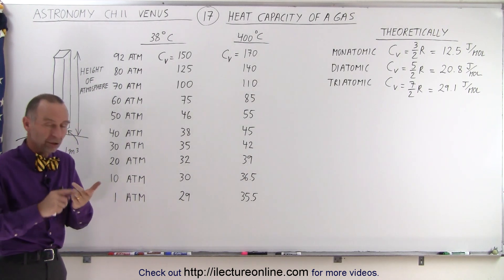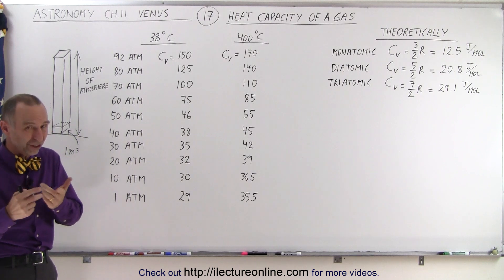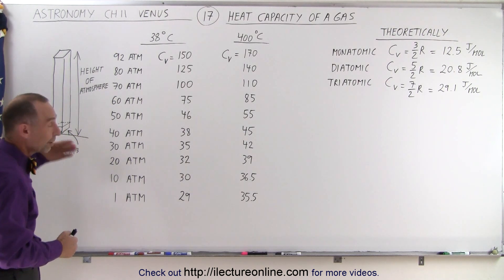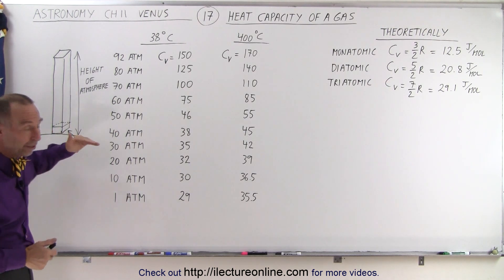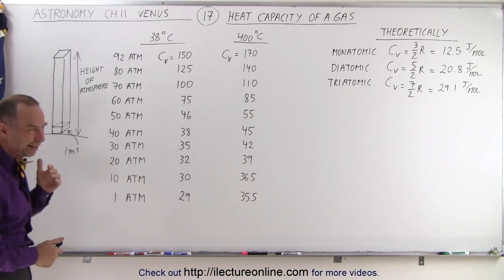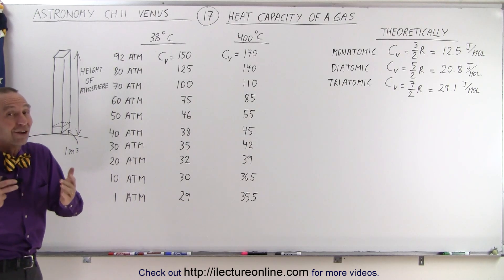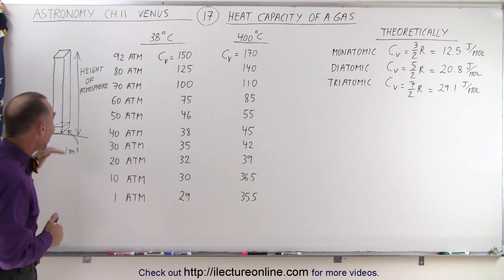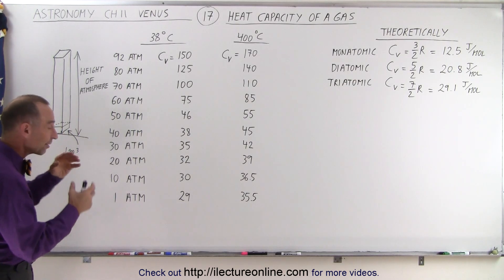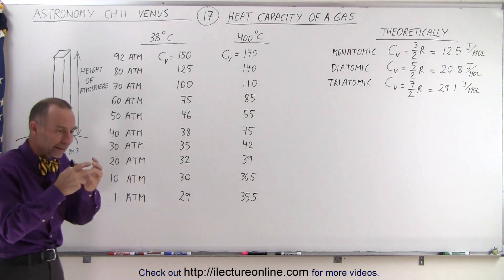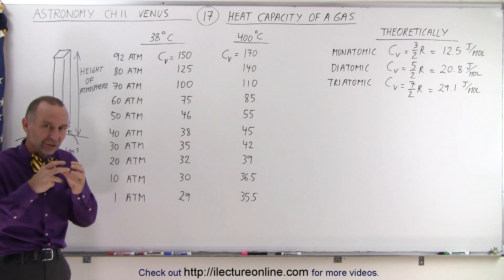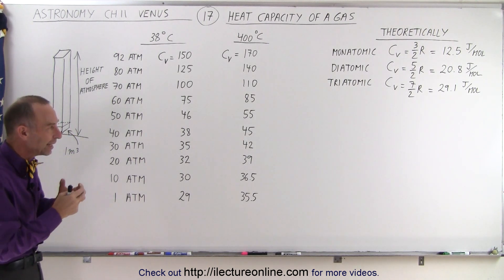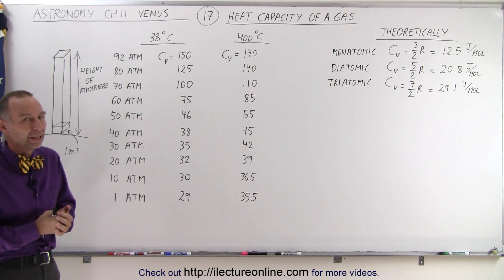Things change. The pressure changes — it becomes less as you go up. The temperature changes — it gets colder as you go up, or at least less hot when we talk about Venus. And the amount of heat that the atmosphere can contain, the heat capacity, changes as well.